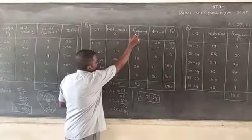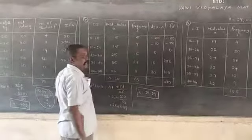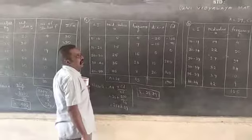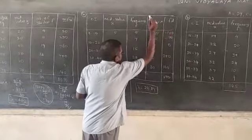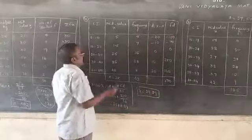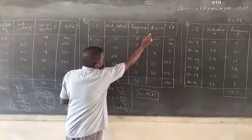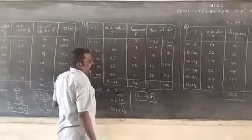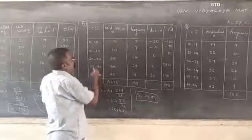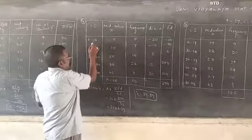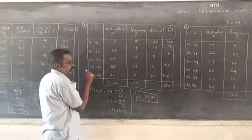Frequency assumed mean method. Table of column: class of column, mid value, frequency, D equal to X minus A. A means here average, average means mean. Next FD. So here, class is given, mid value denoted X, frequency entered here, D equal to X minus A, next FD. So this is the number count. Class is given: 0 to 10, 10 to 20, 20 to 30, 30 to 40, 40 to 50 is given.